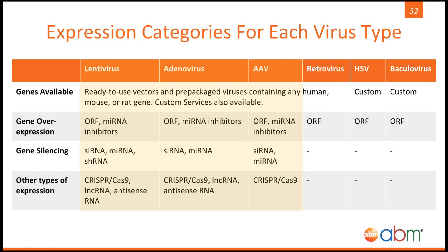Another factor to think about in your viral system is which expression type you would like. You can choose from overexpression through ORFs and miRNA inhibitors, or if you would like to silence a gene, this can be done through siRNA, miRNA, or shRNA. You can also choose CRISPR-Cas9 expression if you are looking to create a stable cell line with a specific gene knockout, where the vectors are designed such that Cas9 and your sgRNA are in the same all-in-one vector. You also have the choice of long non-coding RNA constructs and antisense RNA constructs if you wish.